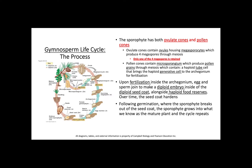Now let's look at the life cycle of a gymnosperm. In gymnosperms, the sporophyte has both ovulate cones and pollen cones. Ovulate cones contain ovules housing megasporangium sites, which produce megaspores through meiosis. Pollen cones contain microsporangium, which produce pollen grains through meiosis. Each pollen grain contains a haploid tube cell, which brings the haploid generative cell to the archegonium for fertilization.